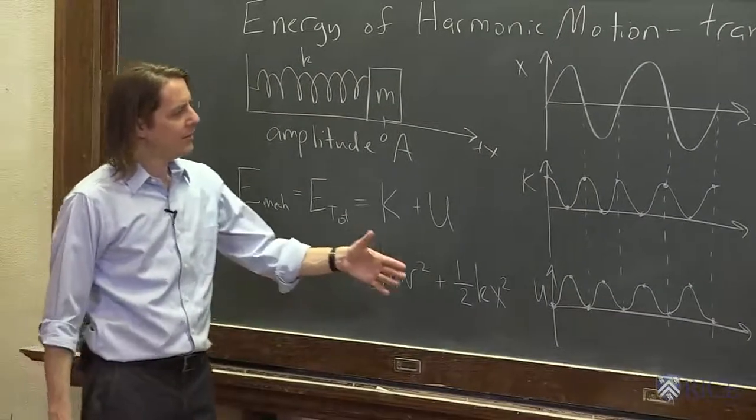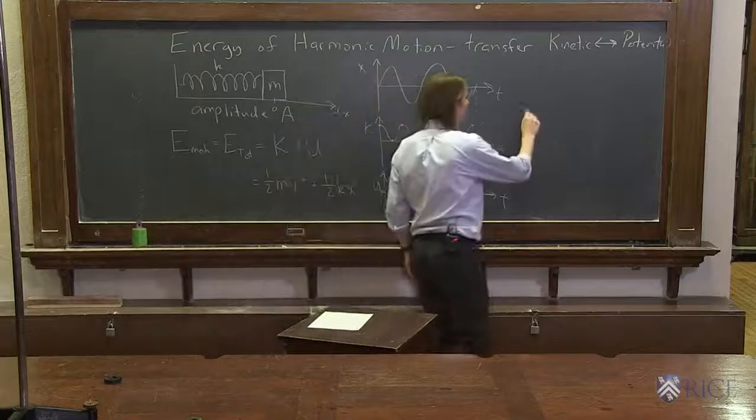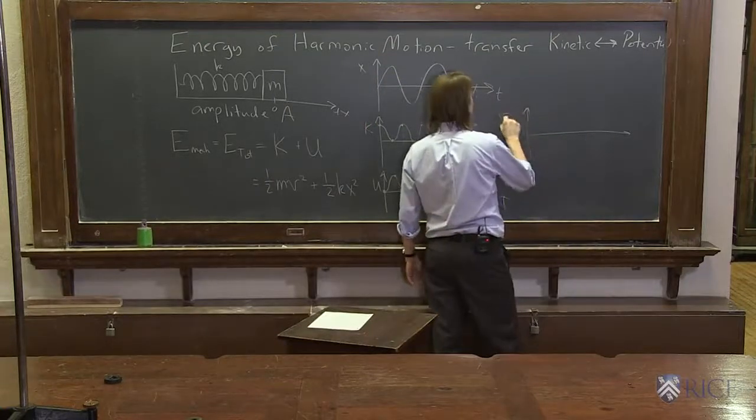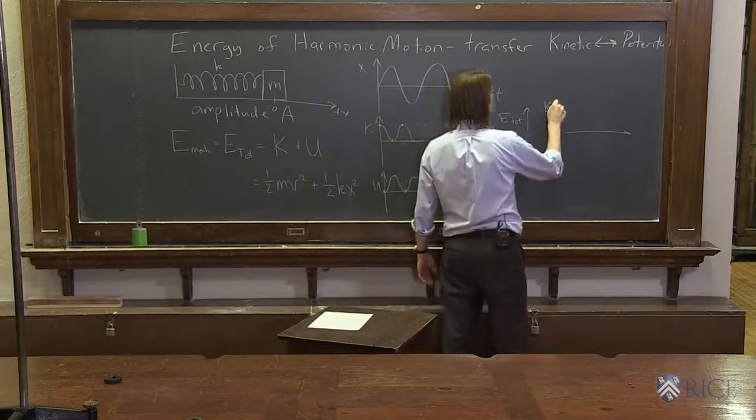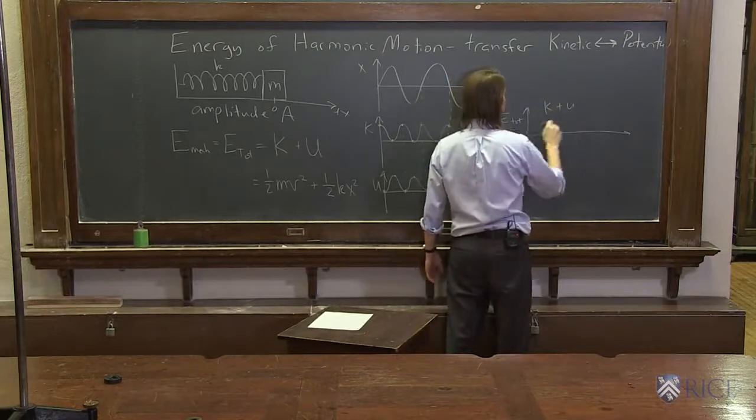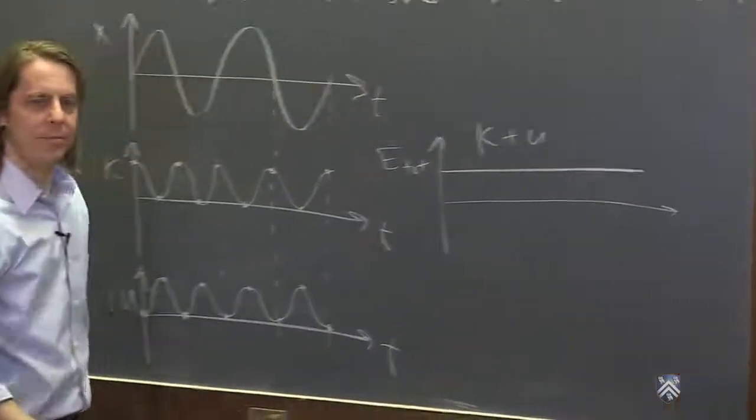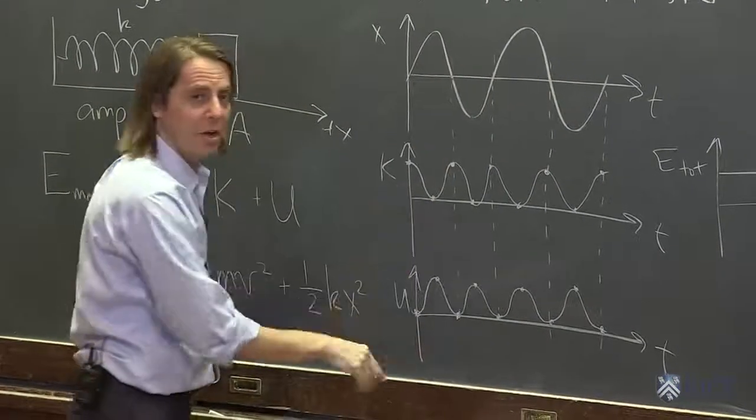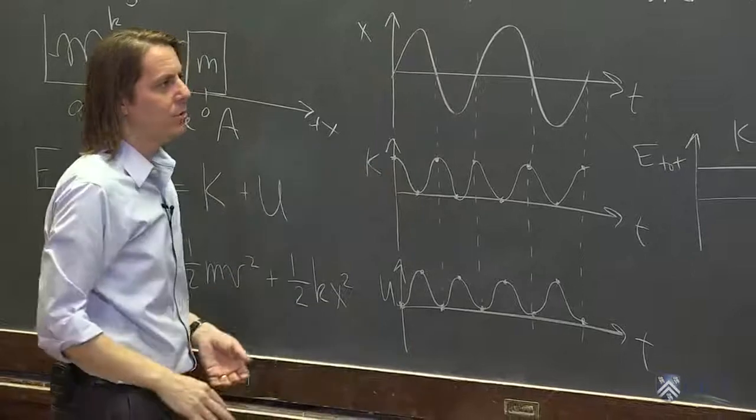If I were to plot the sum of K plus U, E total equals K plus U, it's a line. You can see wherever this one is high, this one is low. Whenever this one is low, this one is high. You add them together, and the total energy is constant.